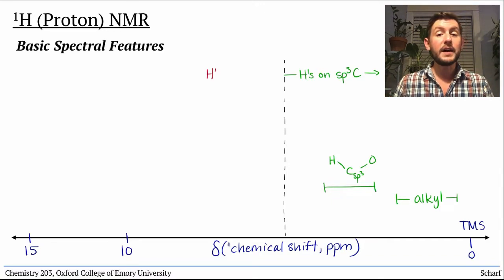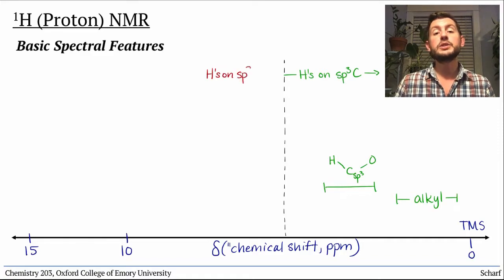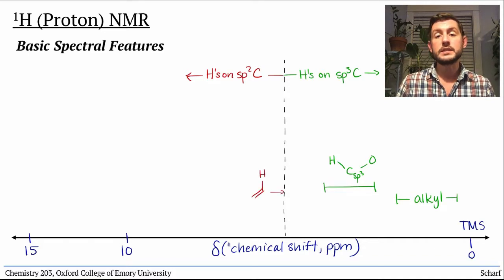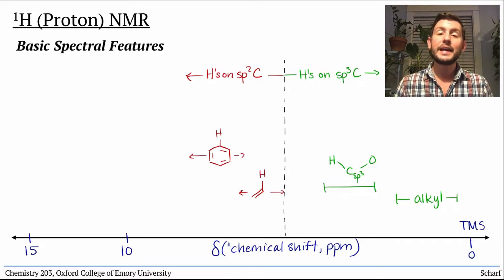Above about 5 ppm, we find hydrogens bonded to sp2 carbons. Alkenes usually between about 5 and 6, benzene rings in the 7 to 8 range, and aldehyde hydrogens are usually around 10 ppm. There are many more details about the positions of hydrogens in common functional groups in your textbook.